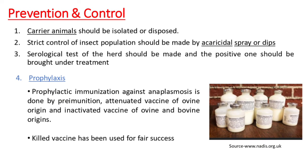Coming to prevention and control of the disease. First, isolation of the carrier animals. Second, strict control of the insect population should be made by acaricidal spray or dips. Third, serological testing of the herd should be made and the positive ones should be brought under treatment. Through prophylaxis, prophylactic immunization against anaplasmosis is done by pre-immunization, attenuated vaccine of bovine origin, and inactivated vaccine of bovine and ovine origin. Killed vaccine has been used with fair success.